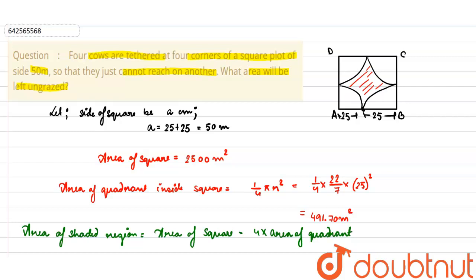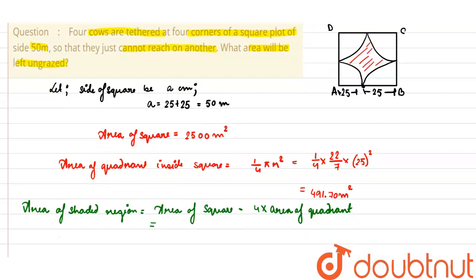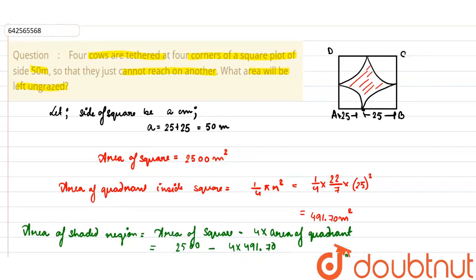So now here we will put the values. The first value of that is area of the square is equal to, we know it is equal to 2500 minus 4 into 491.70 which is equal to 2500 minus 1966.28 which comes to as 535.71 meter square. So this is the answer which is being asked in the question given above.